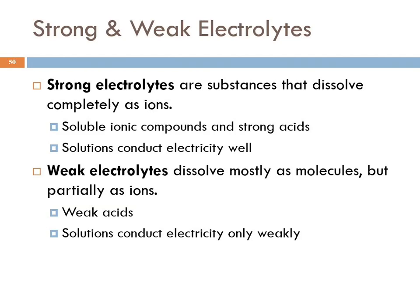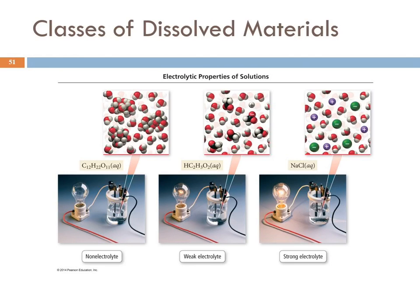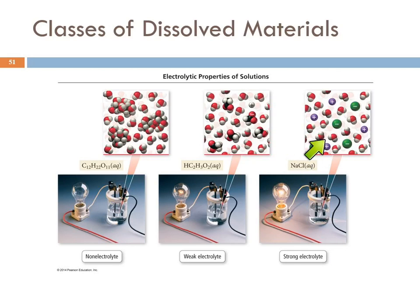Electrolytes, like the acids, are also considered strong and weak. A strong electrolyte dissolves completely into ions — these are the soluble ionic compounds and the strong acids — and these solutions conduct electricity well. Weak electrolytes dissolve mostly as molecules but partially as ions; they conduct electricity but only weakly. The important group we will see as weak electrolytes are the weak acids. To illustrate: a non-electrolyte — the light bulb doesn't light up at all. A weak electrolyte has some ions but not very many, so it conducts electricity and the light bulb glows weakly. A strong electrolyte produces a strong glow because the electricity is flowing well — all of the sodium chloride compound is in ion form.